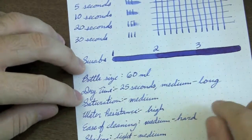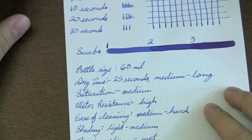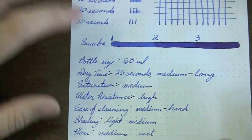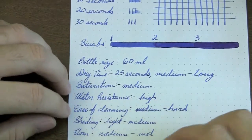Okay, bottle size 60 ml. The dry time is medium to long. I wouldn't say it's a fast dry time. I wouldn't say it's long. It's somewhere in the middle. The saturation of the ink is probably a medium, maybe medium heavy. The water resistance, very, very high. Ease of cleaning, medium to hard.